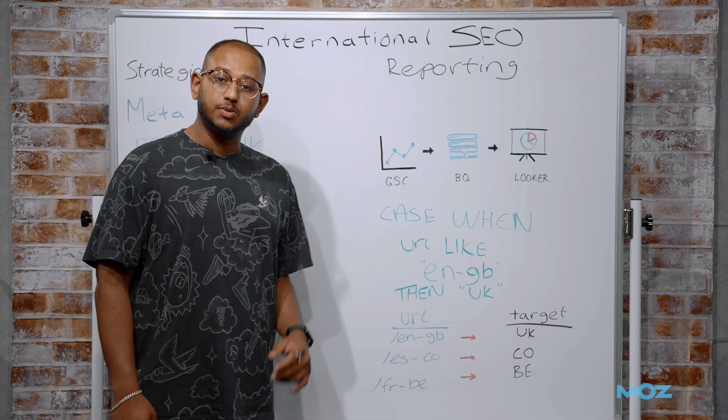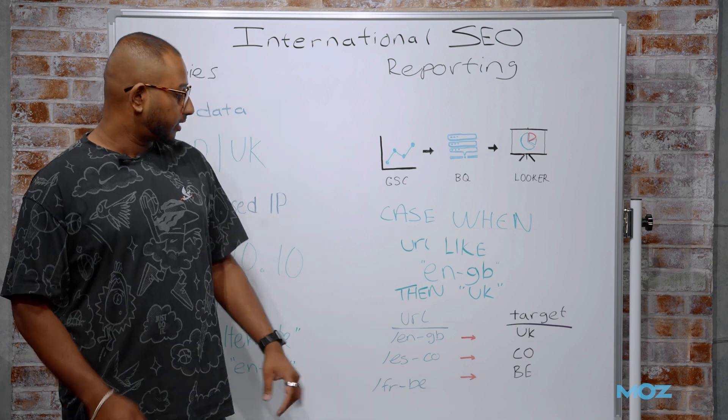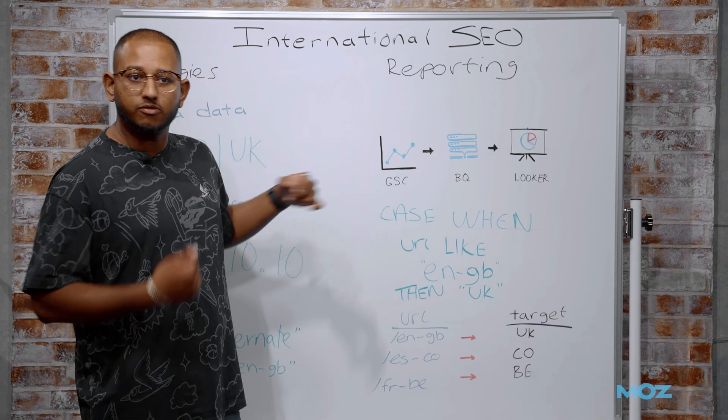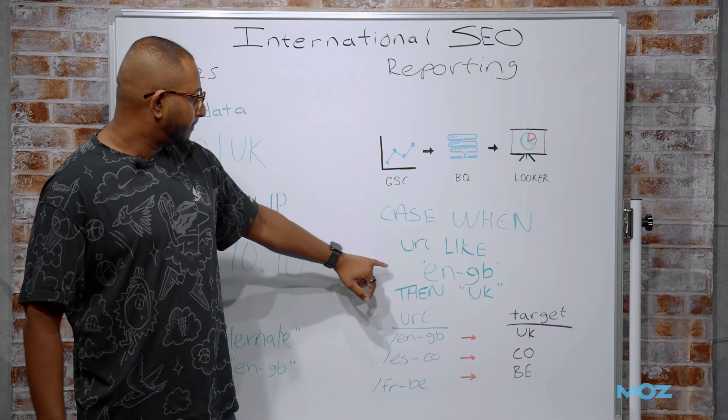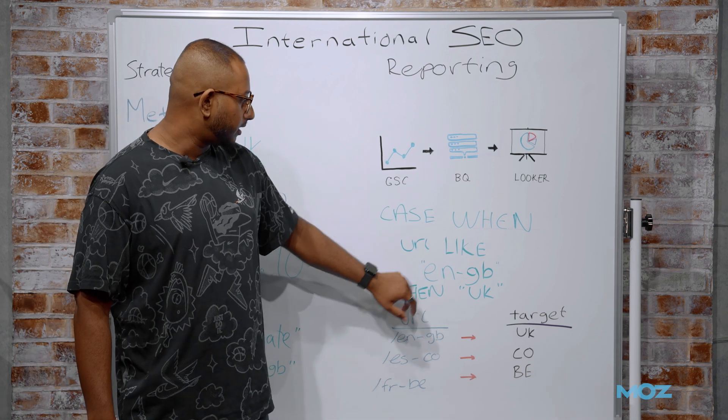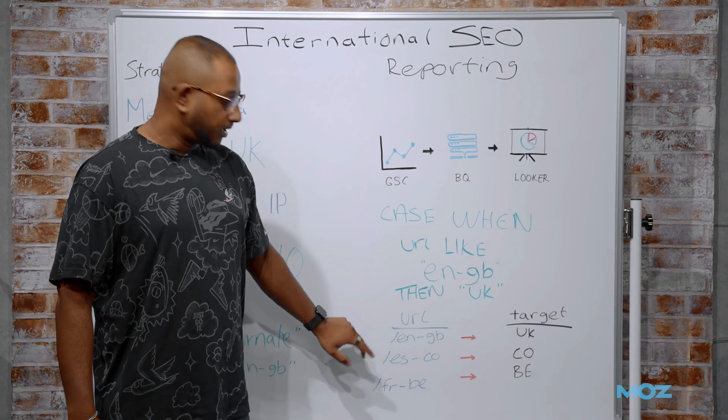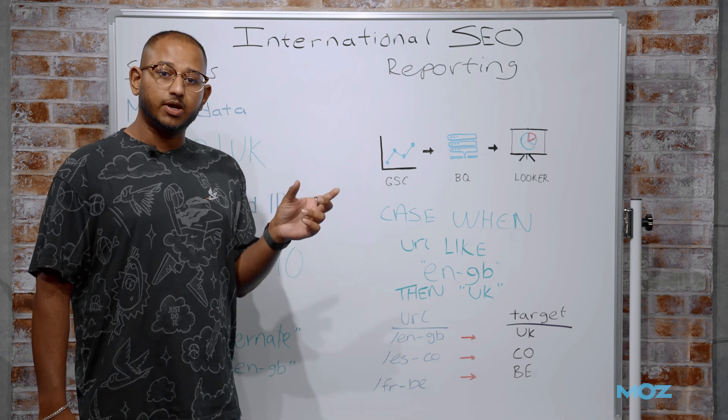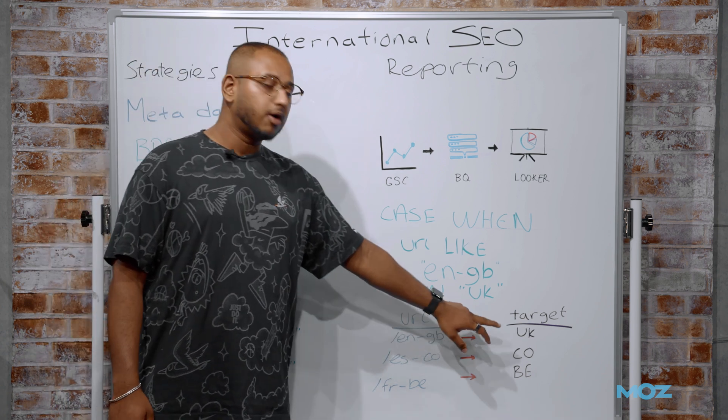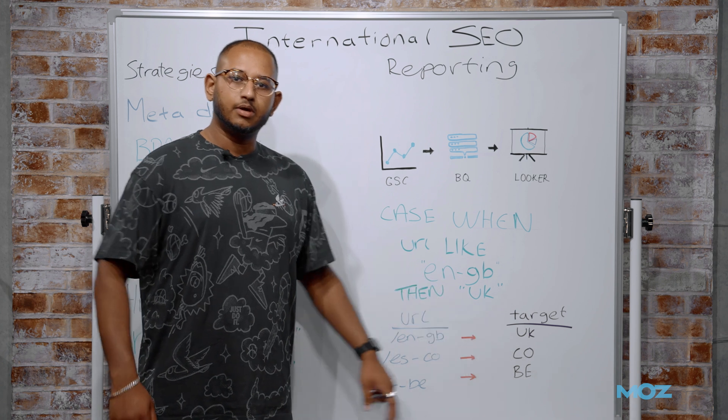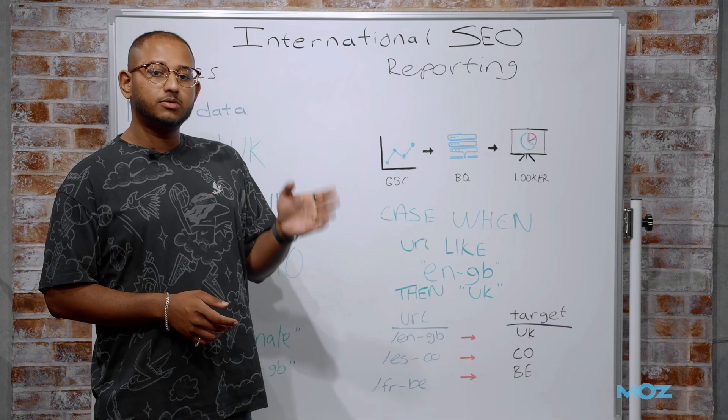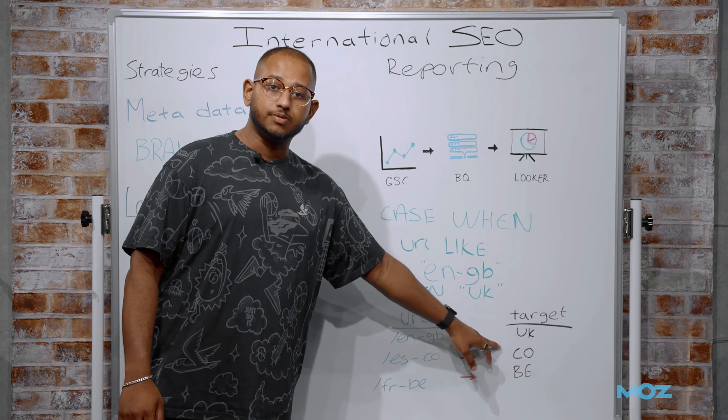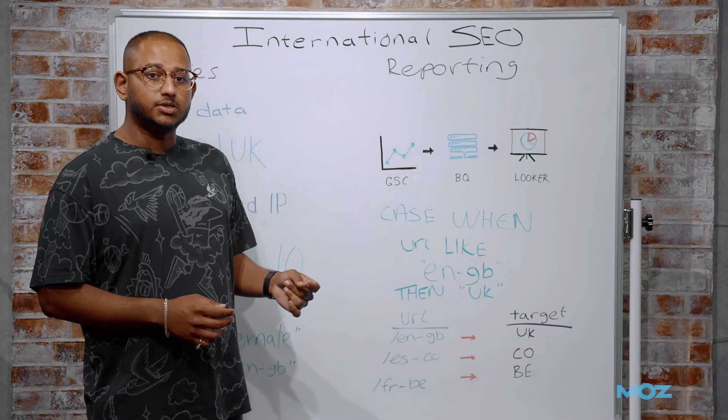So here, we've just got some examples of what those columns look like. Our URL column, that comes straight from Search Console. We get that for free. We don't need to do anything there. And here, we're saying when this column has a URL that contains this specific phrase, then I want it to target the UK. And what that does is, it builds another column for that target country.